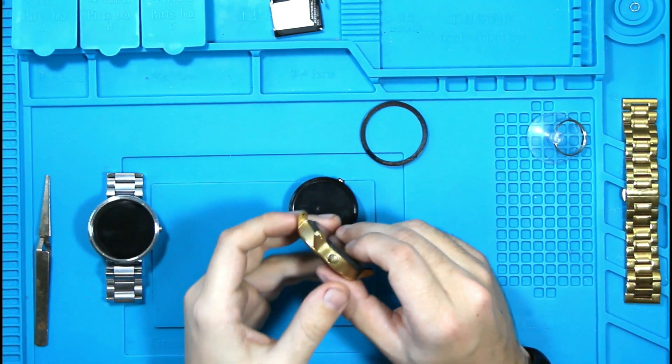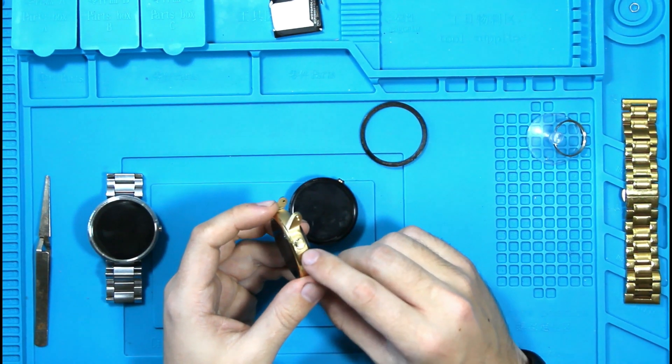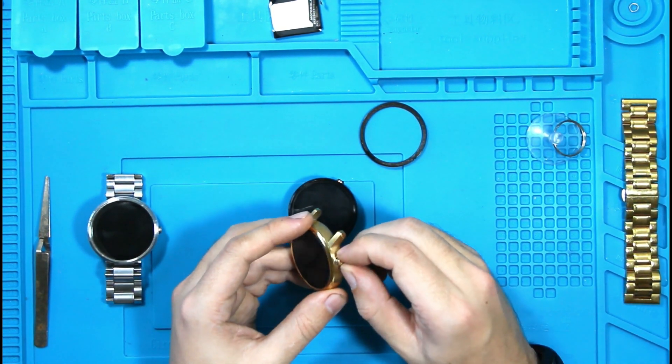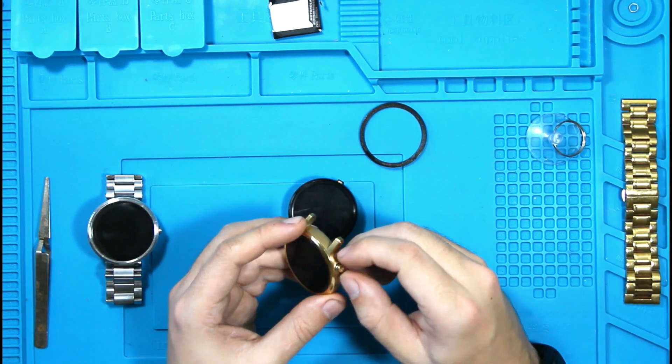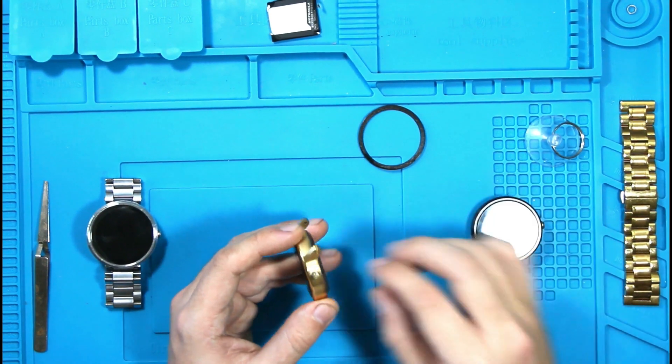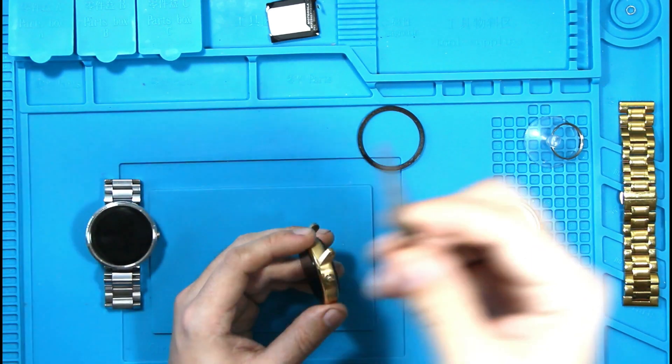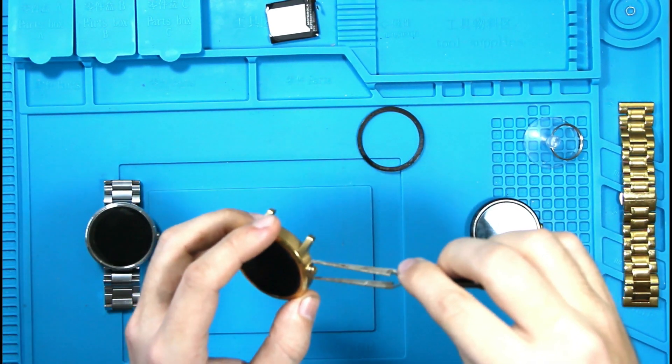So you have to have a very thin set of pliers to remove this. And on the video, like the only real video I followed for this, it seemed very easy to remove. But in practice, it's not. You need very nice pliers that are very resistant. You can't just use any pliers. I'll show you an example here. These are too thick to actually get in here.